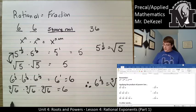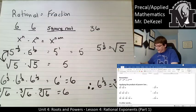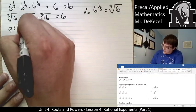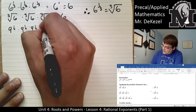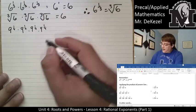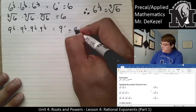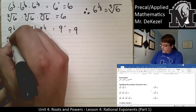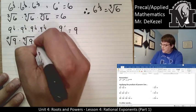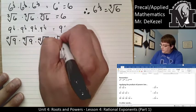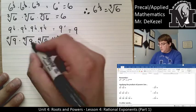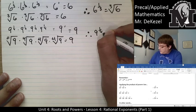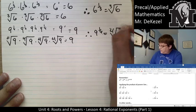Let's do one more. We have nine to the power of a quarter times nine to the power of a quarter times nine to the power of a quarter times nine to the power of a quarter. I need four of them because you add up their fractions to get nine to the power of one, which equals nine. So that means the fourth root of nine times the fourth root of nine times the fourth root of nine times the fourth root of nine is equal to nine. Therefore, nine to the power of a quarter is equal to the fourth root of nine.